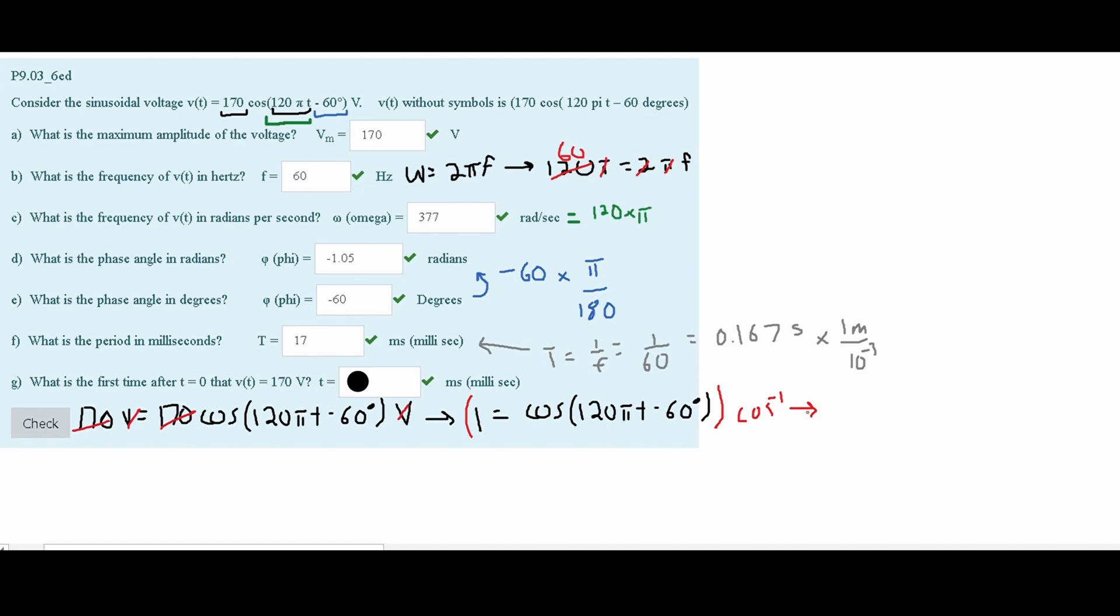And we are going to do this. Make sure the calculator is in radians because the 1 is a radian. This will give us a 0. So now we can start moving things over. We will move our 60 degrees over to the left side. That way, it's a positive. And then we are going to divide both sides by our 120π and set this equal to our T.